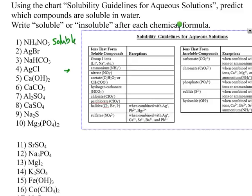AgBr — there's no specific rule for silver, but there is a rule for the halides, including bromide. Halides are soluble; however, they are insoluble if the bromide is with silver, lead-2, or dimercury. Here we have silver bromide, so that makes this substance insoluble. Number 1 would be aqueous; number 2 would be S for solid.